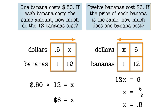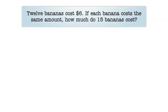These represent two kinds of problems. In the first problem, we started with the unit relationship, referred to as the unit cost — the price of one unit, or one banana. Using that, we found the price of 12 bananas. In the second problem, we started with the price of 12 bananas and found the unit cost. A proportion problem is just a combination of each of these two types of problems into one problem. Here's an example: 12 bananas cost $6. If each banana costs the same amount, how much do 15 bananas cost?